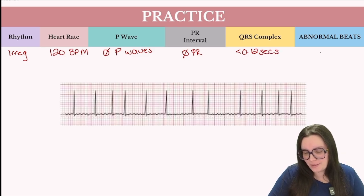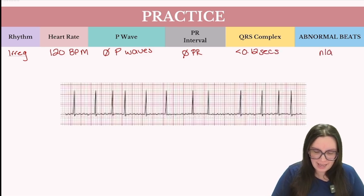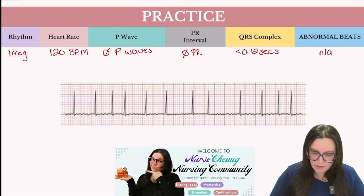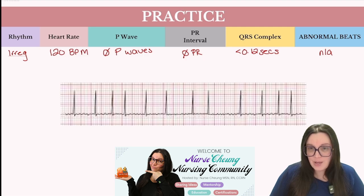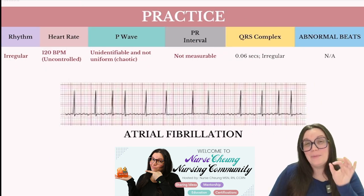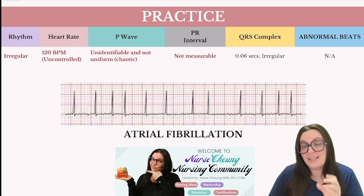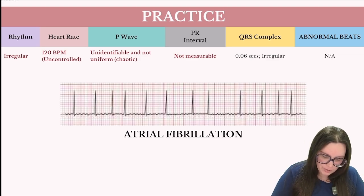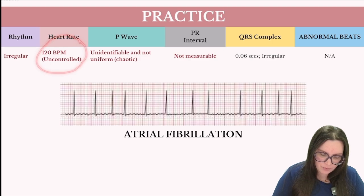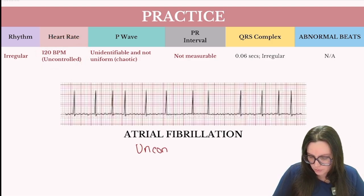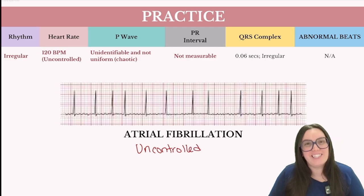Based on everything we see — an irregular rhythm, no P waves, no PR interval, and a narrow QRS complex — we can say with certainty that this is atrial fibrillation. The key takeaway here is that you always have to say whether it's controlled or uncontrolled. Because we have a heart rate of 120 beats per minute, we can absolutely call this uncontrolled atrial fibrillation.